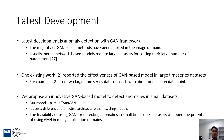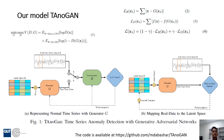We propose an innovative GAN-based model to detect anomalies in small datasets. Our model is named TANUGAN. It uses a different and effective architecture than existing models for detecting anomalies in time series data when the datasets have a small number of data points. Our model TANUGAN has two parts. The first part learns the underlying data distribution using a generator G and a discriminator D in an adversarial setting.